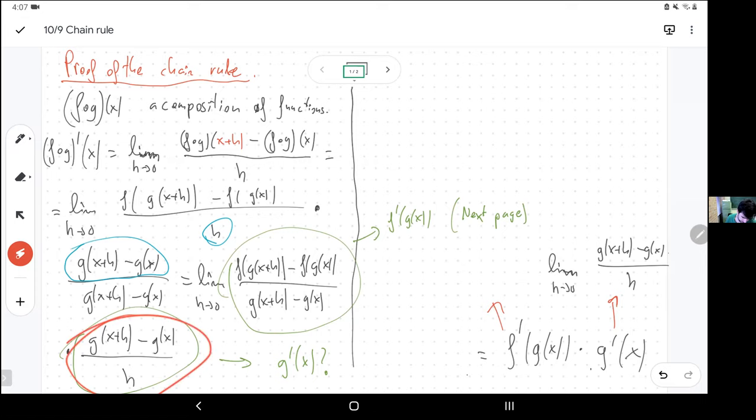Right. So. This. So we have the limit of a product. Now that's going to be the product of the limits. If I know that they both exist. And I do know they both exist now.